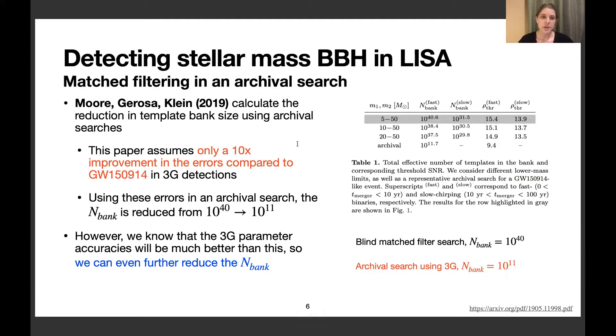This estimate comes from a paper that also shows if you use third-generation ground-based detectors in an archival search, you can reduce the number of templates in that bank. They used an estimate of third-generation parameter accuracies 10 times better than what LIGO detected with GW150914.